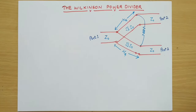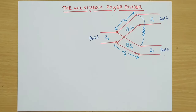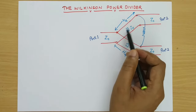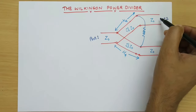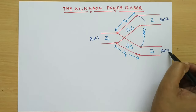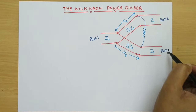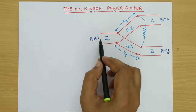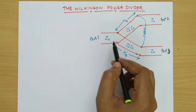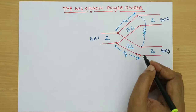Hello friends, welcome to my YouTube channel RIDesignBasics. Today I am going to explain the Wilkinson power divider, which is a power divider having properties of being matched at all the ports — port 1, port 2 and port 3 — and it is reciprocal but lossy.